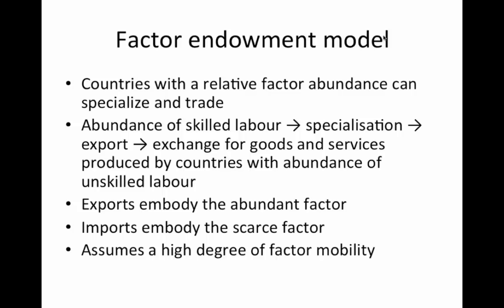This model of comparative advantage often focuses on the endowment of factors of production that a country might possess. If a nation is endowed with abundant cheap labour, or perhaps skilled labour, they will tend to specialize in and then export the products which they can produce most cheaply using that labour. Typically, a country's exports embody the abundant factor — it could be labour, land, natural resources, or highly capital-intensive products — whereas a country's imports embody the scarce factor. For example, India is a net importer of oil, whereas Norway is a net exporter of oil. The theory of trade assumes that factors of production are fairly mobile from sector to sector.